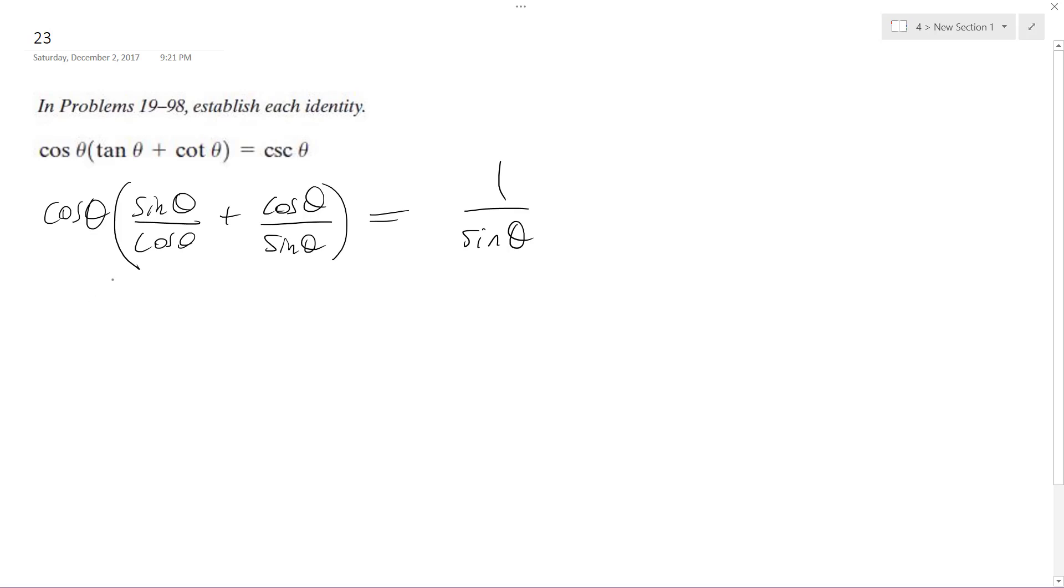Alright, so when we multiply cosine theta times tangent, that crosses out, so we're just left with sine theta plus cosine squared theta over sine theta equals one over sine theta.